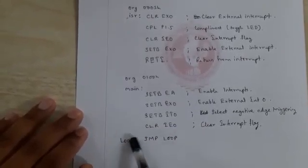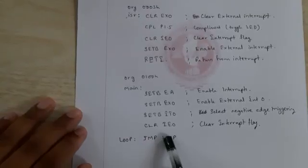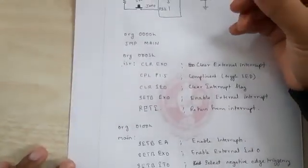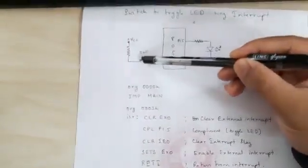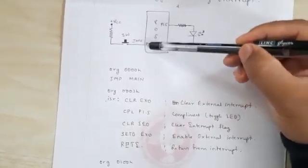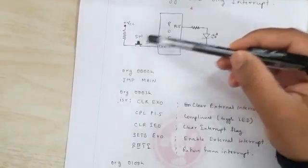Then we stay in the loop with JMP LOOP, so it will repeat here only. Whenever the switch is pressed, VCC is connected to P3.2, so you get a positive edge, and when you release, you get a negative edge.